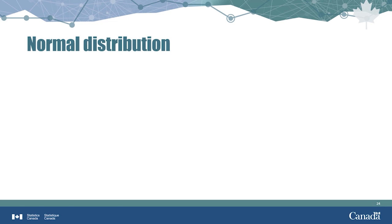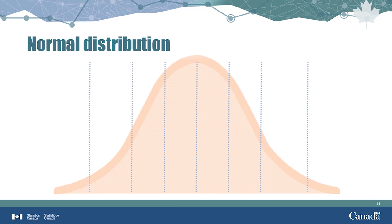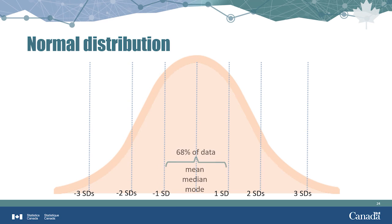For the standard normal distribution, standard deviation has some notable properties. It tells us where to expect data points to be in the distribution. Approximately 68% of the data values in the whole population will fall between the mean plus or minus one standard deviation. Similarly, approximately 95% of the data values will fall within the mean plus or minus two standard deviations.